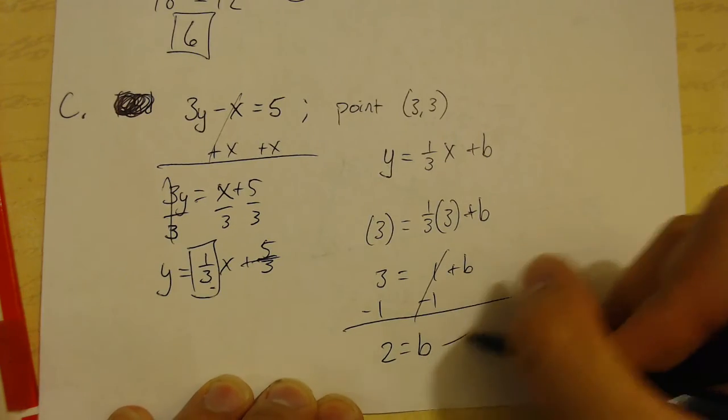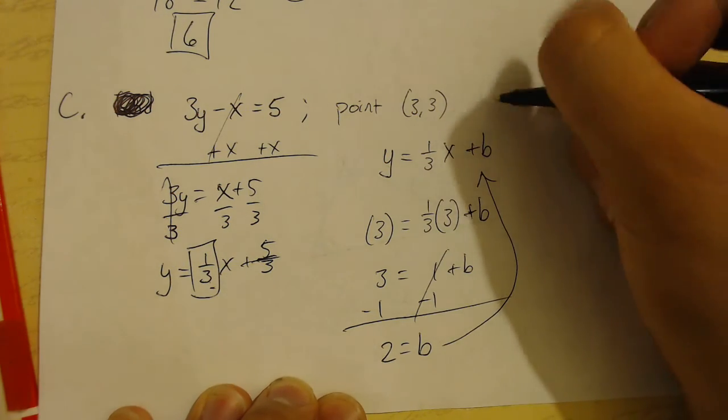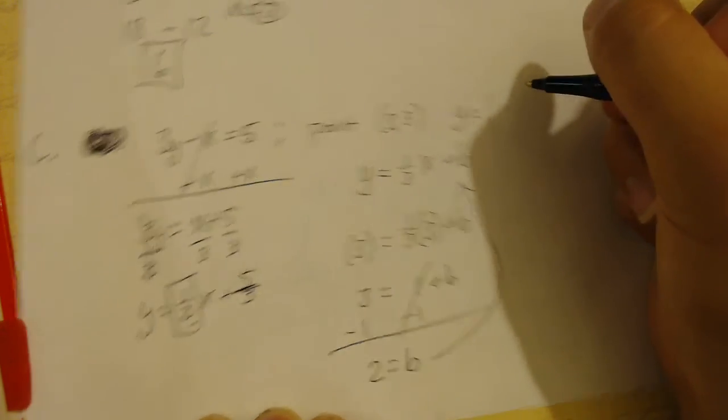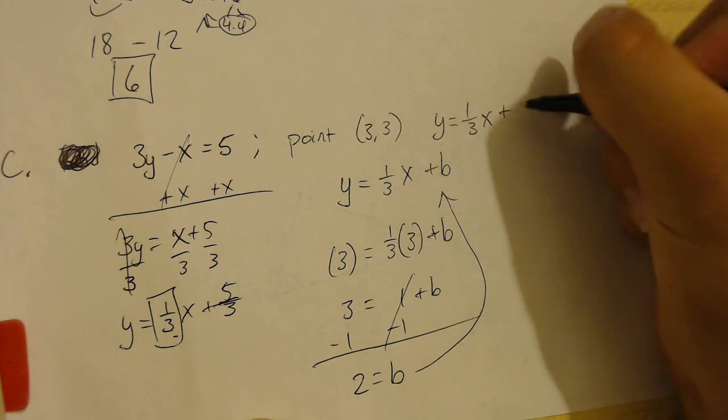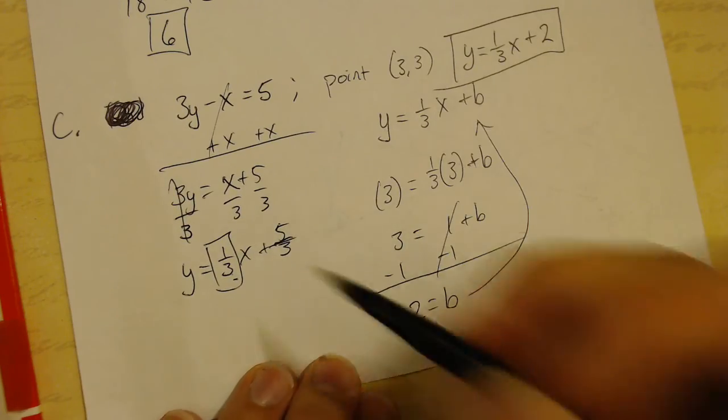So, now that I know b, I'm going to plug this into the equation that I'm working with. And the answer is y equals 1 third x plus 2. And that is the equation of our line, which is parallel to this one.